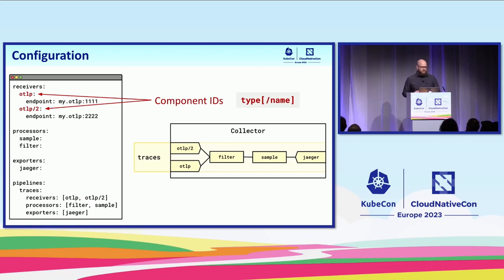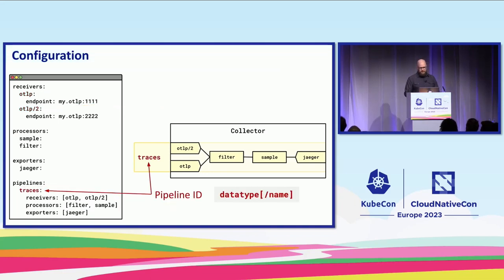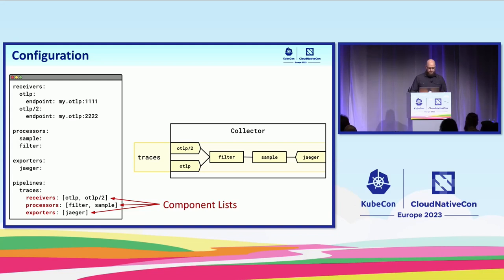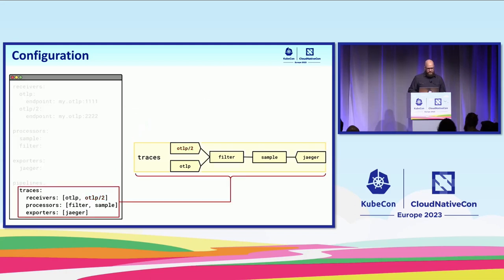Down here we have a pipeline configuration. Pipelines also have a unique ID — it's the data type and then optionally a name. Then we specify the receivers, processors, and exporters that we'd like to use in the pipeline. This implies the structure of the pipeline and is enough for us to understand the data flow in most cases. We refer to the component IDs that we specified above to specify the receivers, processors, and exporters.